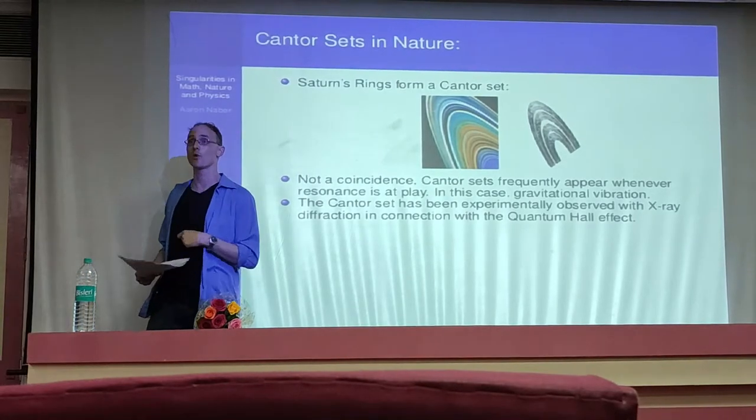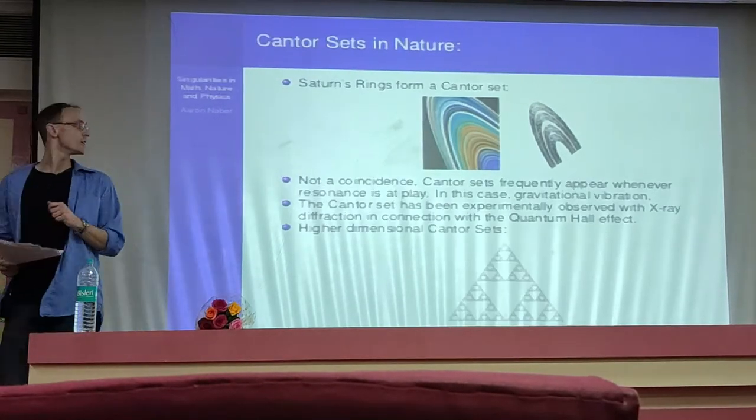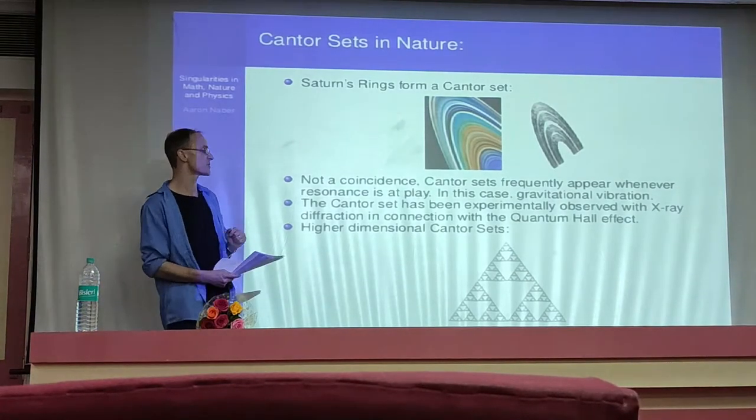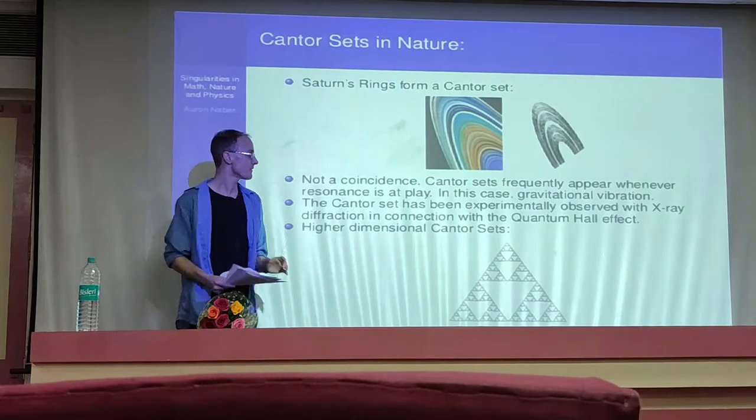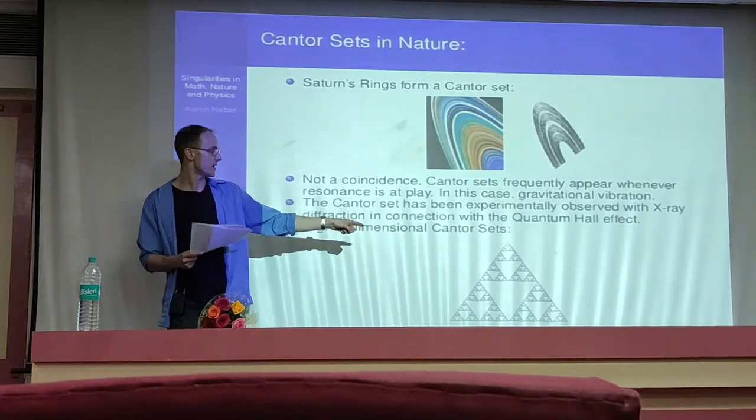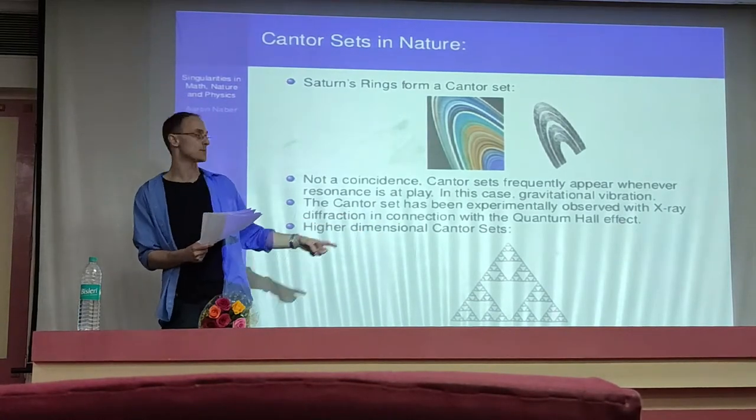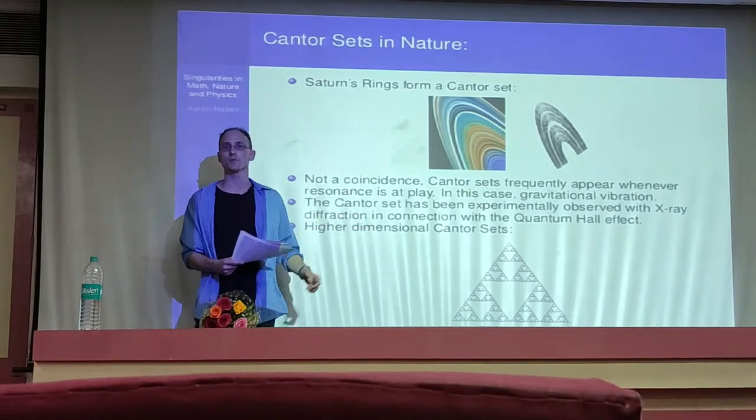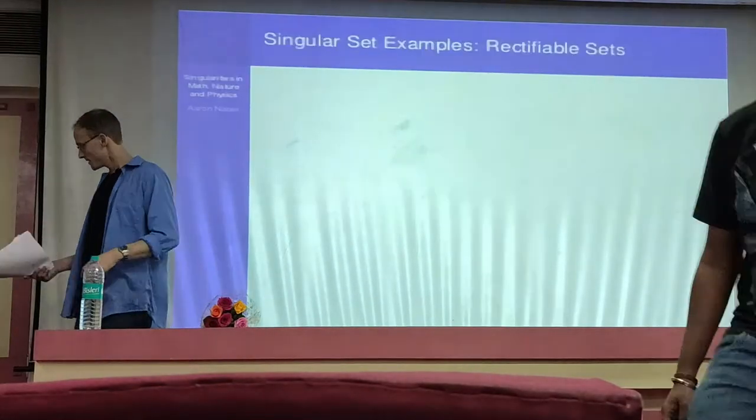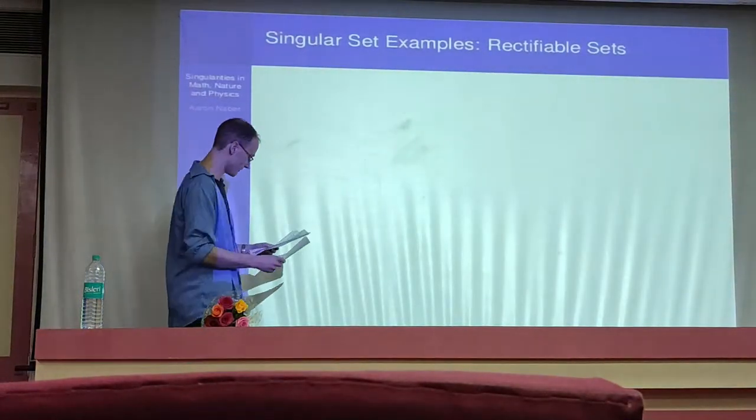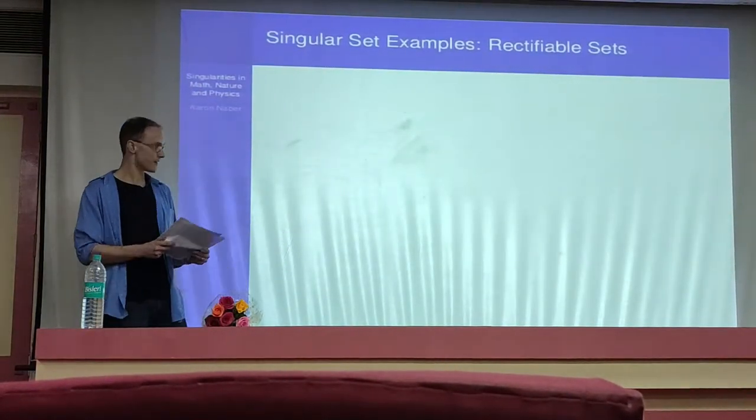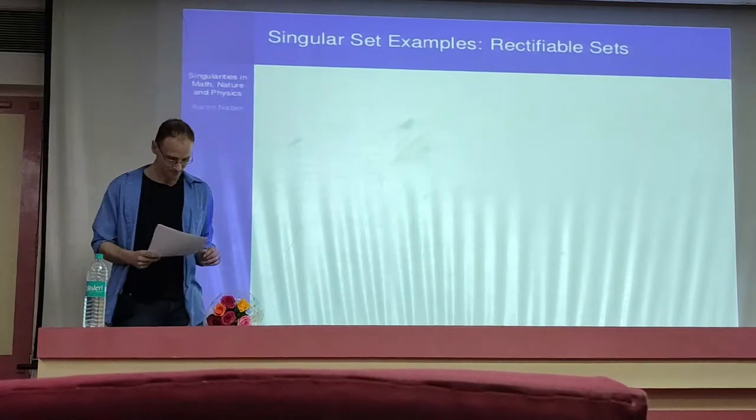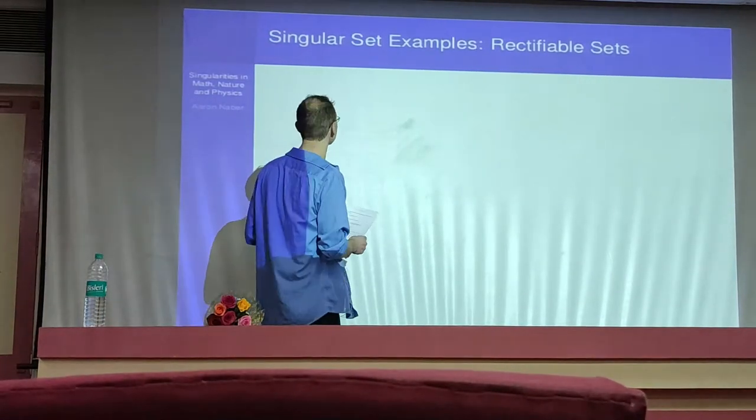One nice other example is that it also appears from x-ray diffraction. This is coming from the so-called quantum Hall effect. You can do this in other ways. Instead of taking one-dimensional objects, you can do this in a billion ways. For instance, you can take triangles and keep removing the middle chunk of them as you keep going. This would be a two-dimensional Cantor set, though it wouldn't be two-dimensional if you get its dimension, but it's also something funky.